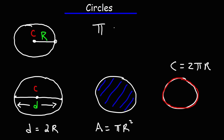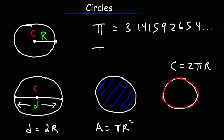Pi is equal to 3.14159265. There are more digits after that, but typically when solving these problems in school, you'll be using the approximate value of pi, which is usually 3.14.